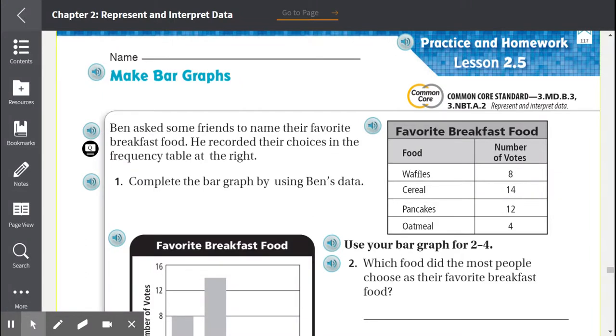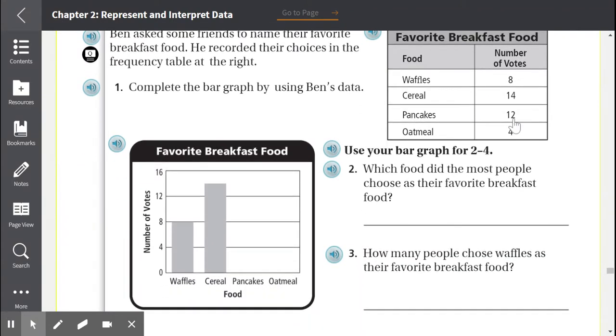Lesson 2.5, Make Bar Graphs. Ben asked some friends to name their favorite breakfast food. He recorded their choices in the frequency table at the right. So we see the favorite breakfast food, we see the different food, and the number of votes.